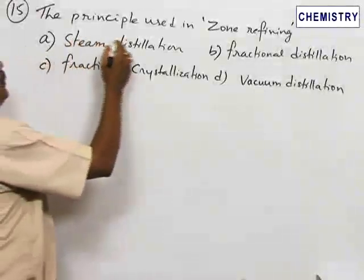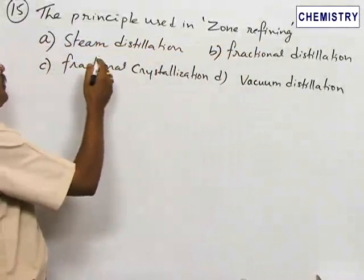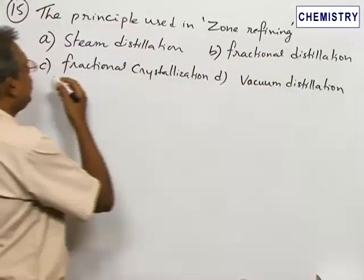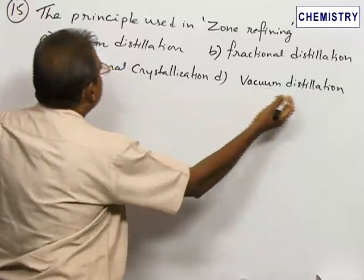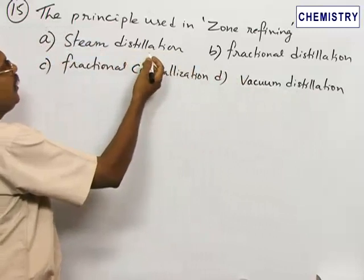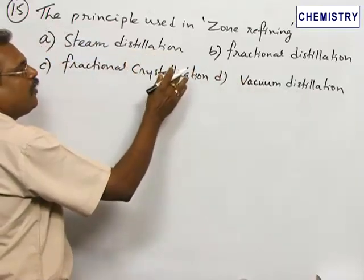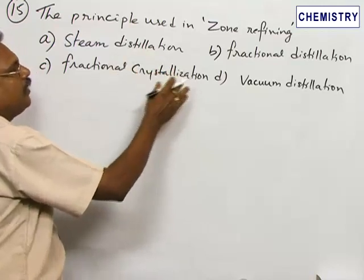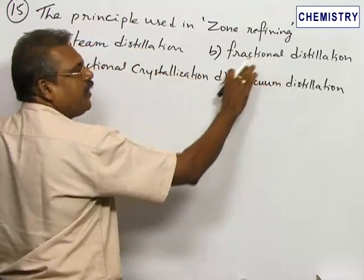Number 15: The principle used in zone refining. Option A: steam distillation, option B: fractional distillation, option C: fractional crystallization, and option D: vacuum distillation. Steam distillation is used to separate a mixture of liquids where one may be steam volatile and another steam less volatile. Fractional distillation is used to separate liquids that differ in boiling point marginally.